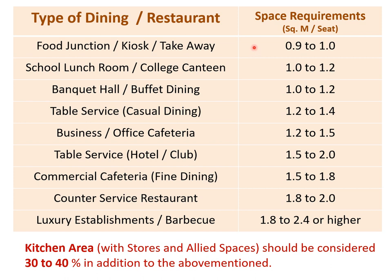Whatever the theme of the restaurant may be, floor space is required for every food establishment. Let us review the space requirements for different types of restaurants. For food junctions, kiosks, or takeaway restaurants, 0.9 to 1.0 m² per seat is required. School lunch rooms or college canteens require 1.0 to 1.2 m² per seat. Banquet halls or buffet dining areas are calculated at 1.0 to 1.2 m² per person. Table-serving or casual dining requires 1.2 m² per seat. Business or office cafeterias require 1.2 to 1.5 m² per seat.